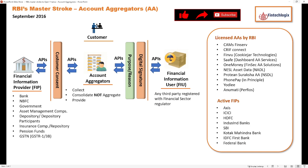FIUs are third parties who seek information about the customer for various needs. There might be a need for processing a loan, giving a credit card, or any other services like BNPL loans or other offerings. Any financial information user who seeks this information is called an FIU.